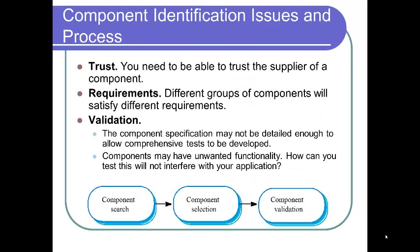Some issues in the component identification process: Trust — you need to trust the supplier of a component, but since components are opaque black boxes, you don't always get that. Requirements — different groups of components will satisfy different requirements. Validation is also tricky: the component specification may not be detailed enough to develop comprehensive tests, and components may have unwanted functionality that could interfere with your application.